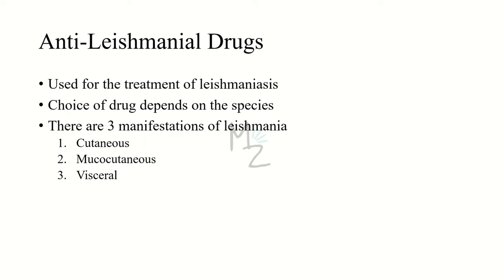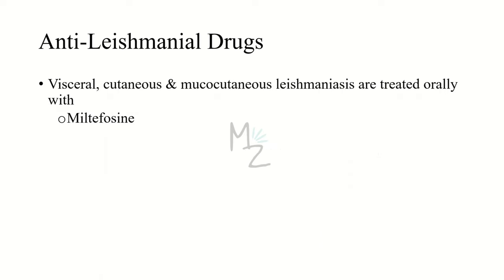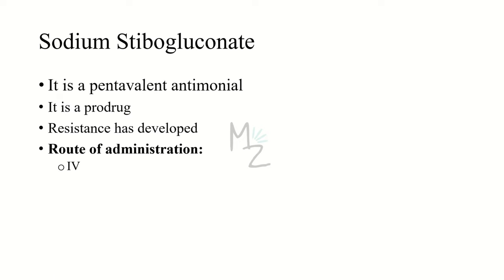Now let's look at anti-leishmanial drugs, used for the treatment of leishmaniasis. The choice of drug depends on the species of Leishmania. There are three manifestations: cutaneous, mucocutaneous, and visceral. Visceral leishmaniasis is treated parenterally with amphotericin B and pentavalent antimonals — which include sodium stibogluconate and meglumine antimoniate — along with pentamidine and paromomycin. Visceral, cutaneous, and mucocutaneous leishmaniasis are all treated orally with miltefosine. We'll look at sodium stibogluconate, a prodrug reduced to the active trivalent antimonal compound. Resistance has developed against it, and its route of administration is intravenous.